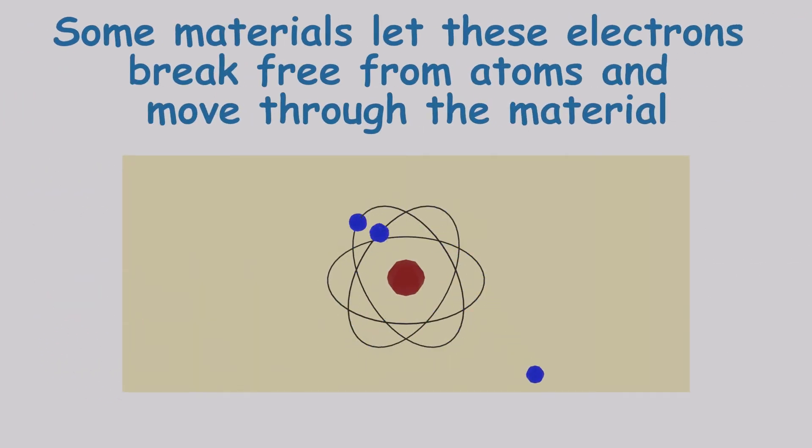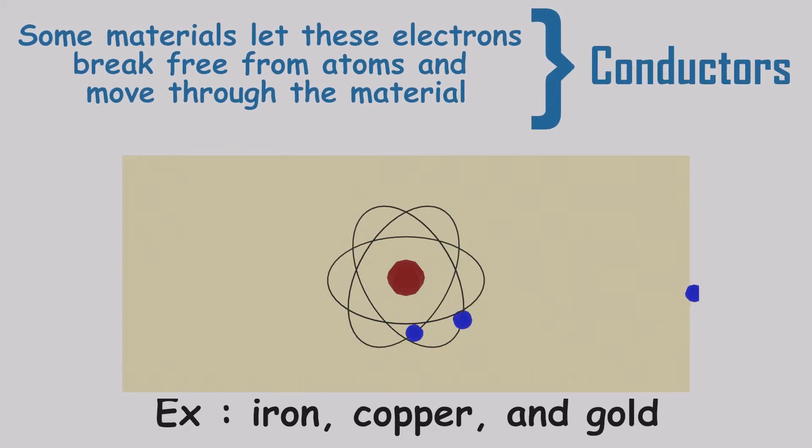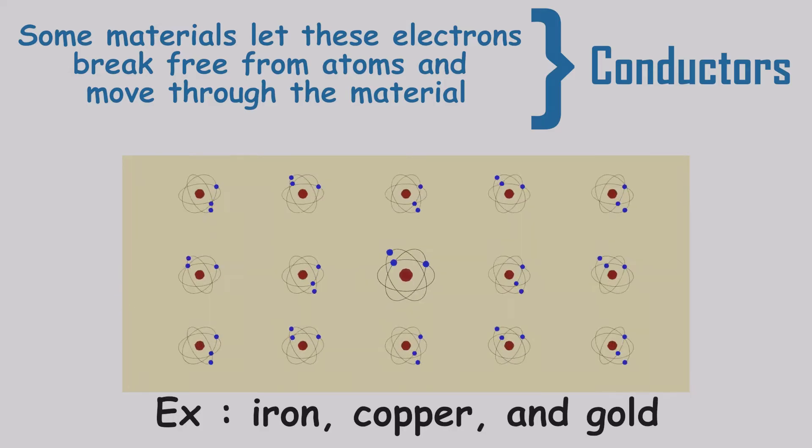Now here's the cool part: some materials let these electrons break free from their atom buddies and glide through the crowd of atoms. Metals like iron, copper, and gold are the rock stars at this. Since these materials allow electrons to flow through the material, they're like electron highways, so we give them a special name: conductors.